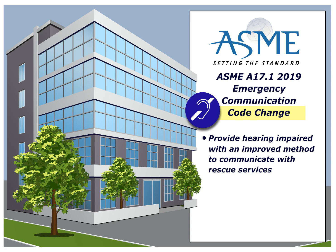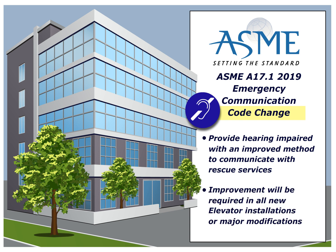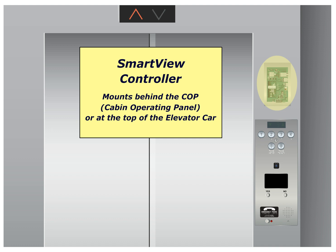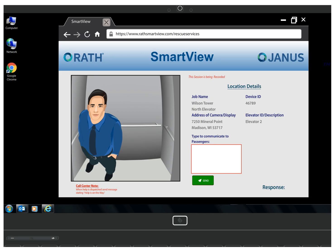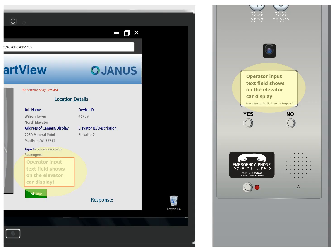The heart of the code change is to provide the hearing impaired with an improved method to communicate with rescue services. This improvement will be required in all new elevator installations or major modifications. The code requires a SmartView controller, an adjustable camera that can see the floor and be viewed remotely by rescue services, and a display on the car panel that allows rescue services to remotely ask questions by typing a message and getting yes or no responses.